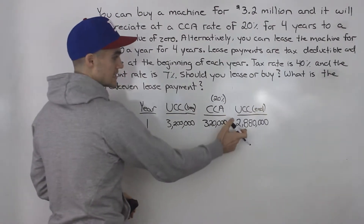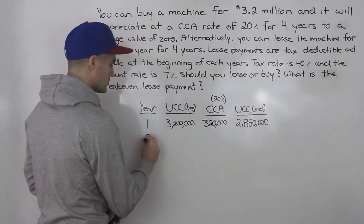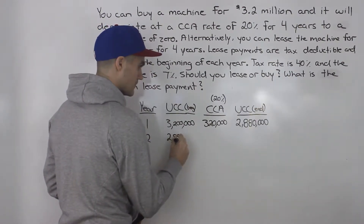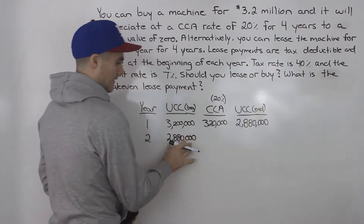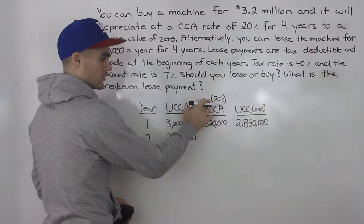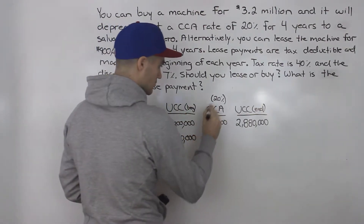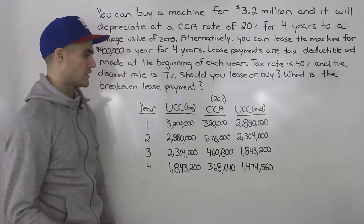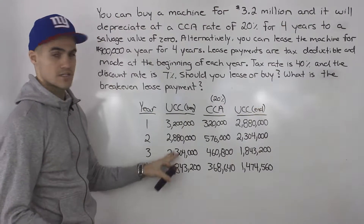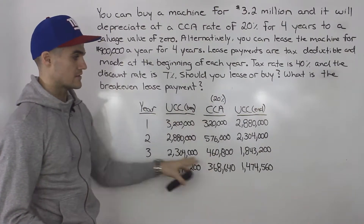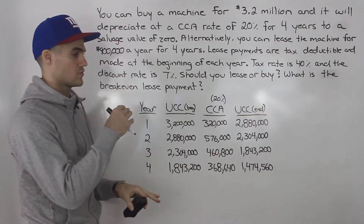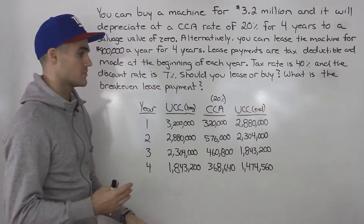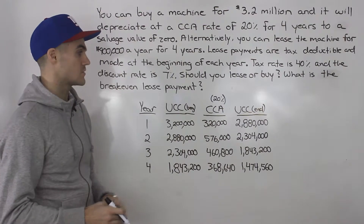The UCC at the end of year one becomes the UCC at the beginning of year two. We carry that figure down and multiply by 0.2 for full depreciation — giving 576,000. When you fill out the rest of the CCA chart, you get these exact figures. You can also get this from the Excel file by inputting a CCA rate of 20% and capital expenditure of 3.2 million.